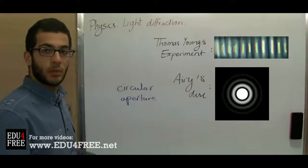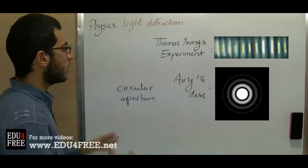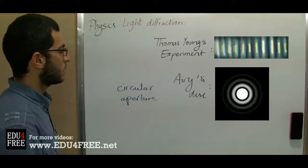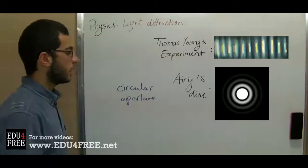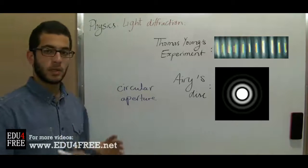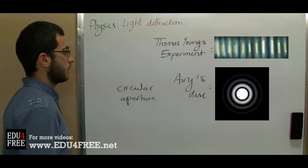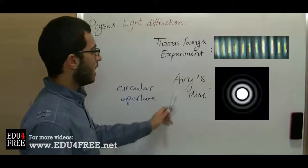So we can notice that this is circular because the light passed through a circular aperture. We get a central bright circle, then a dark ring surrounding this circle, then another bright ring, then a dark ring until it disappears because the angles become so big. So this is Airy's disk.